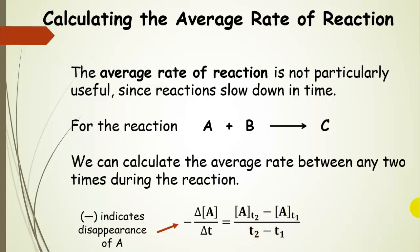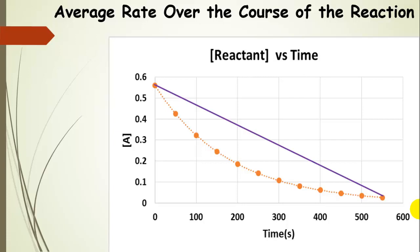So if we make these intervals smaller and smaller, we can get to an instantaneous rate, which we'll talk about in just a second. Now here is our reaction, and then here is the average rate over the whole course of the reaction. This doesn't take into account that the reaction slows down in time. It's just the average rate over the whole course of the reaction.